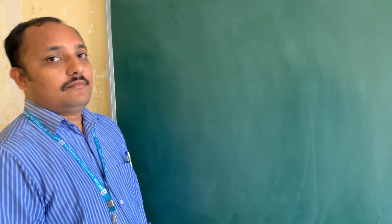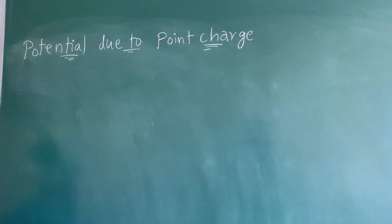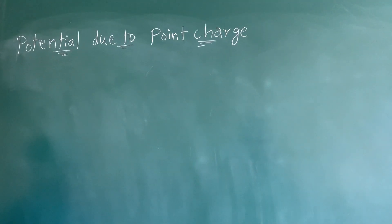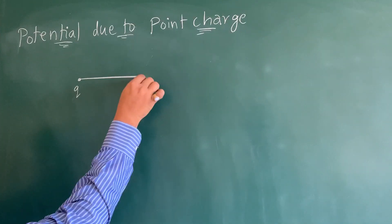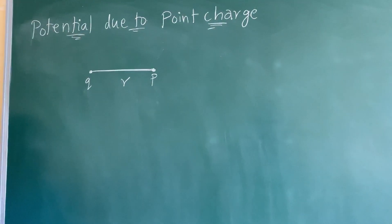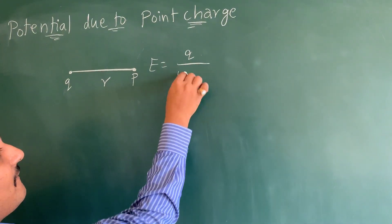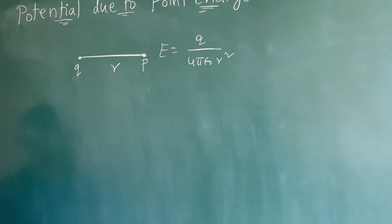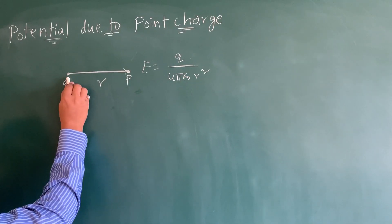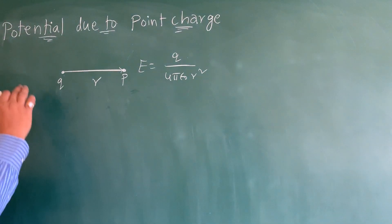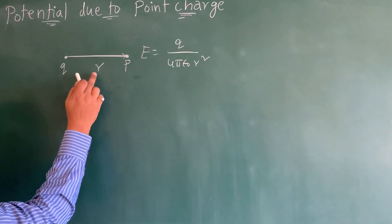Hi students, today we are going to discuss potential due to point charge. Already in the first lesson you came to know the electric field intensity due to a point charge at some point P, which is at a distance r. The formula we got was E equal to Q by 4 pi epsilon naught r square. Now we are going to discuss what is the potential at this point P due to this point charge, at a distance r.